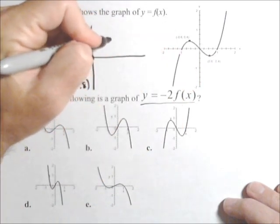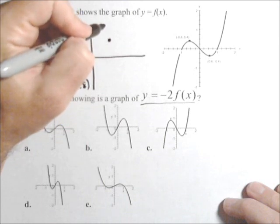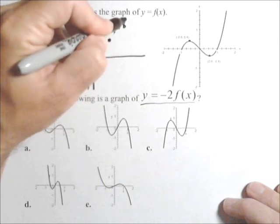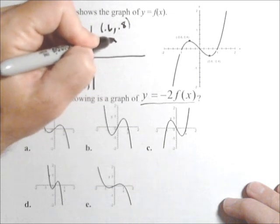And this one here that was at (0.6, -0.4) will now be at (0.6, 0.8). And that's where it's going to curve this way.